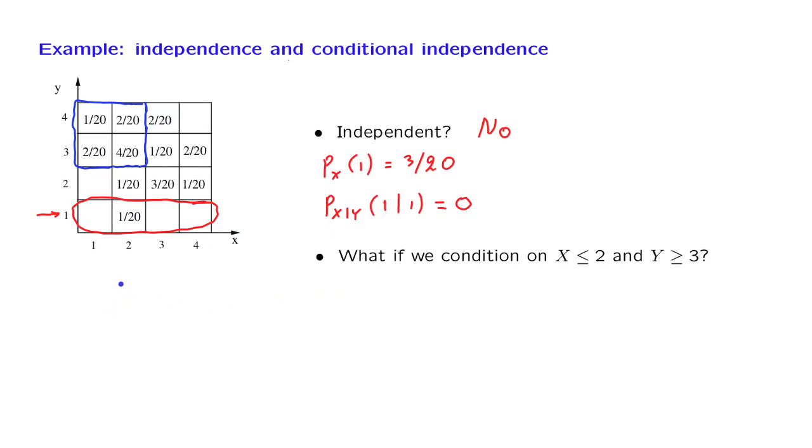The question is, within this new conditional model, are random variables x and y independent? Let us write down the conditional model, where I'm only showing the four possible outcomes that are allowed in the conditional model. All the others, of course, will have zero probability in the conditional model.